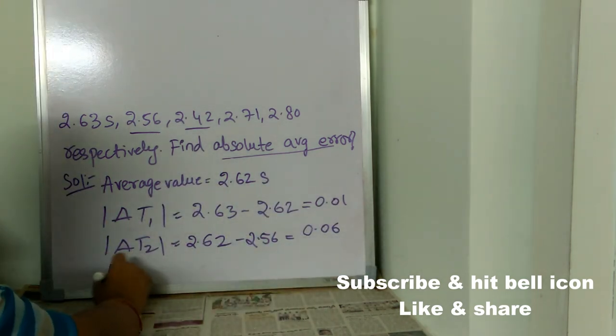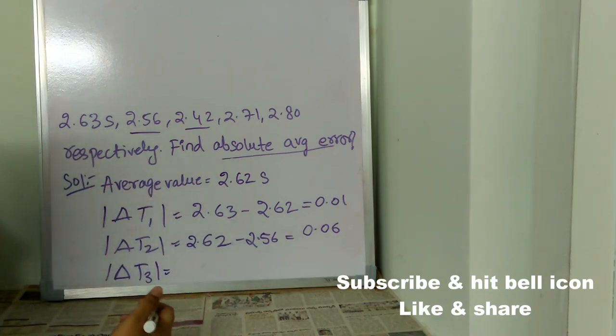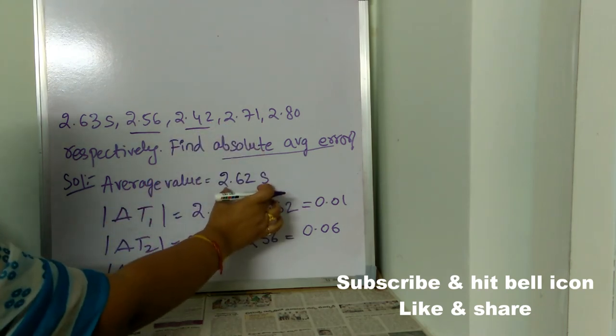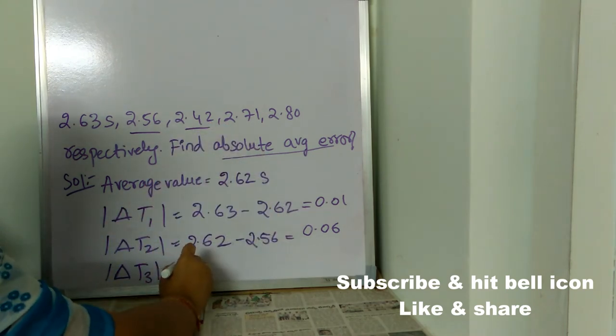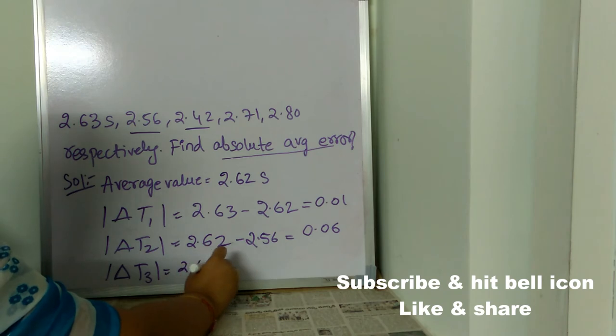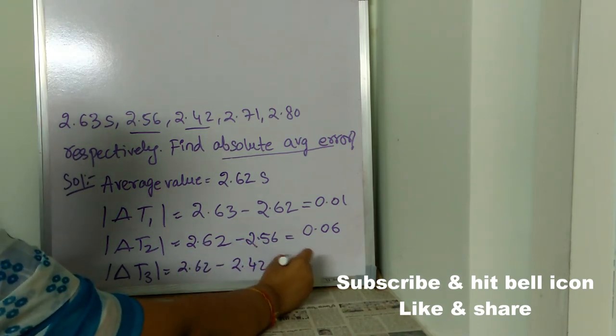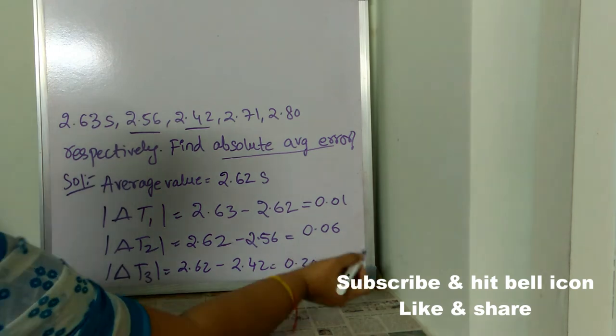Next is delta T3. Delta T3 is also very easy. You just need to find the difference between third value and average. 2.62 minus 2.42 which is 0.20.